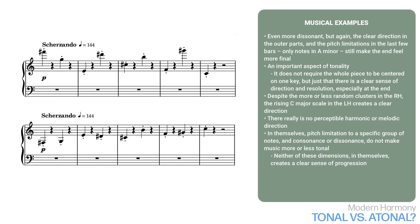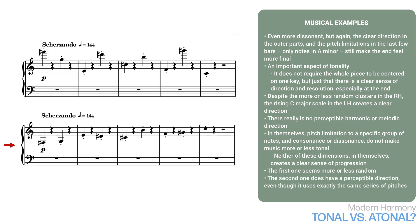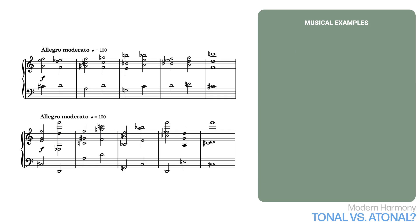Now let's try another experiment. If we compare these two examples, the first one seems more or less random. However, the second one does have a perceptible direction, even though it uses exactly the same series of pitches. All I've changed in the second example is the octave positions. I've arranged them here so that the overall line rises in waves. It's not a simple scale, but each peak is higher than the one before: E, B, C. So prominent lines, especially the outer parts, and register can be used to create harmonic direction.